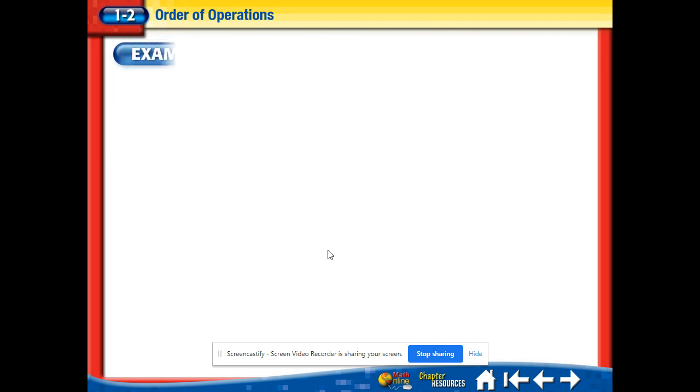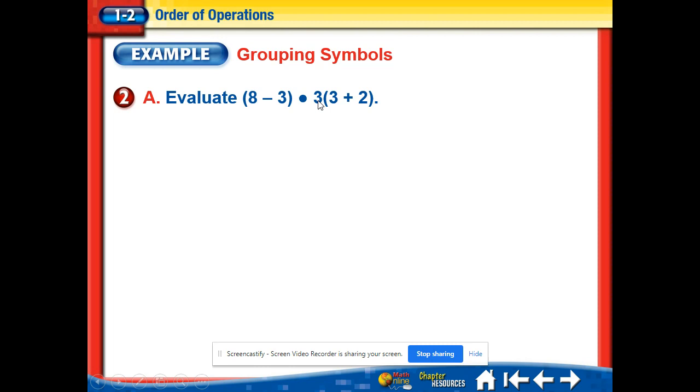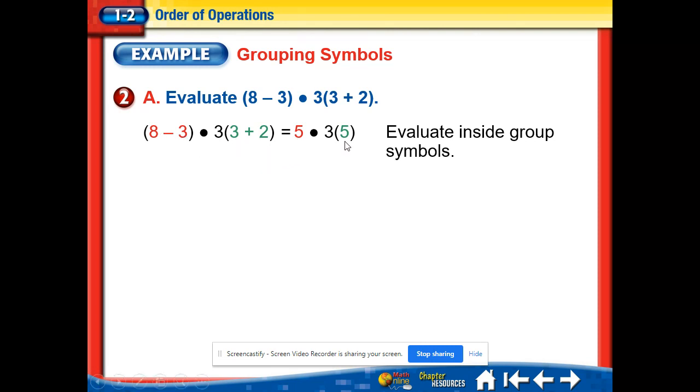All right, let's try another one. This one actually has some grouping symbols, some parentheses. So we're going to have to do those first. We're going to have to do what's inside the parentheses. So that 8 minus 3 and the 3 plus 2, we're going to do them both because they're separate. We can do that. So 8 minus 3 is 5. 3 plus 2 is also 5.